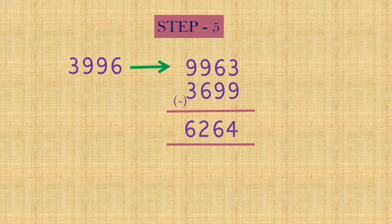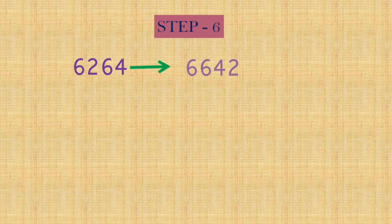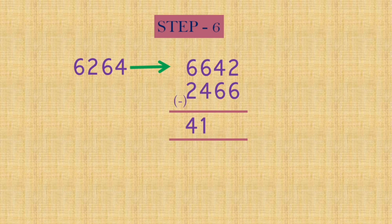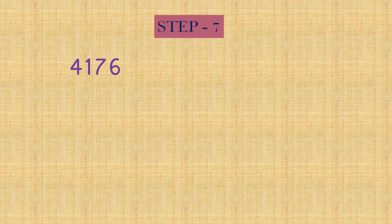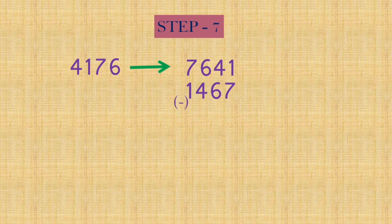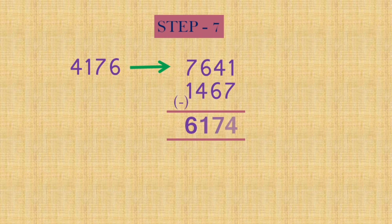Again the same process. 6264, biggest number and smallest number 4176. The smallest number, biggest number. Then subtract, what do we get? We get 6174. We have reached it in the seventh step.